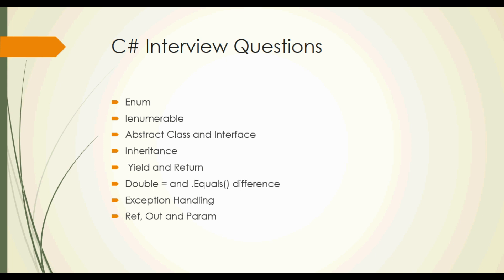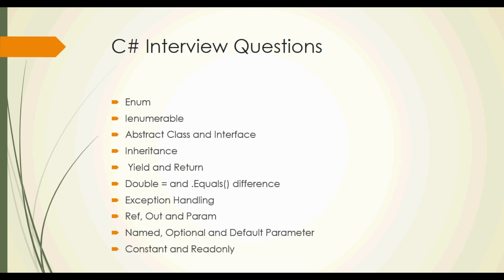Ref, out, and params — differentiate between ref, out, and params. This is an important question in C#. Named, optional, and default parameters — learn these and implement them in your program.